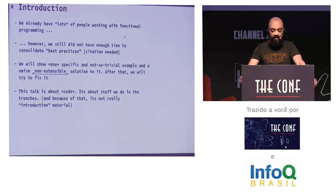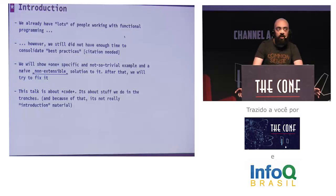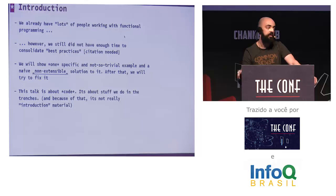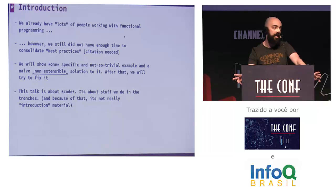We already have lots of people working with functional programming, but we still did not have enough time to consolidate best practices — and I need a citation for that. This is something I've been seeing for a while. The objective of this talk is to show one very particular and very frequent problem I encountered with functional code bases and people learning functional programming. I'll show one specific and not-so-trivial example, and a naive, non-extensible solution to it. After that, we'll try to fix it.